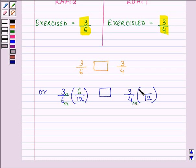Whereas 4 multiplied by 3 is 12. Therefore 3 multiplied by 3 will be 9. Since we are multiplying the denominator by 3, we need to multiply the numerator also by the same number.